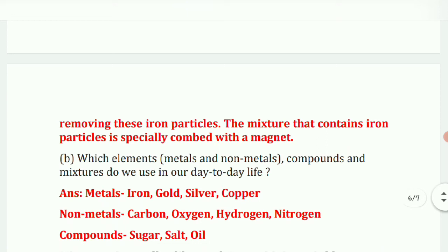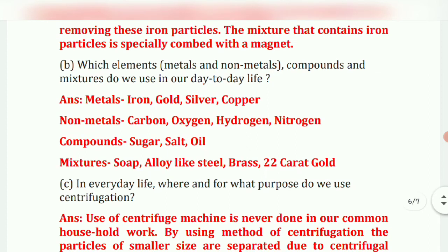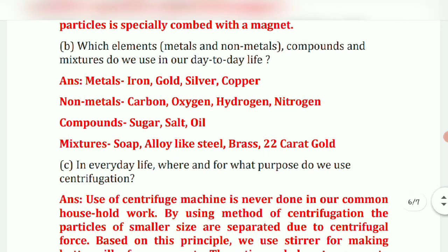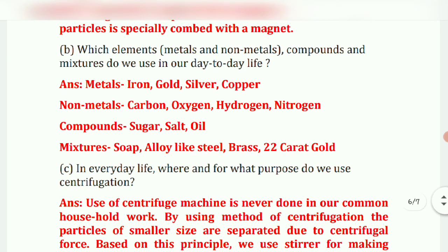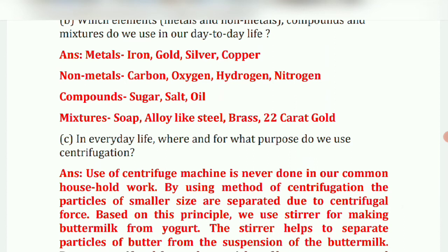Next question: which elements, metals, non-metals, compounds and mixtures do we use in day-to-day life? Metals: iron, gold, silver, copper. Non-metals: carbon, oxygen, hydrogen. Compounds: sugar, salt, oil. Mixtures: soap, alloys like steel, brass, and 22-carat gold.